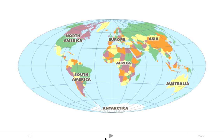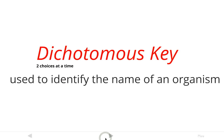Imagine that you're an explorer sailing around the world and you come across a tiny island that no one's ever found before, and you find an organism there that you've never seen before and you want to figure out what kind of organism it is. Well, if you're a scientist, you have a tool to help you figure out what kind of organism it is or what its name is, and that tool is called a dichotomous key.